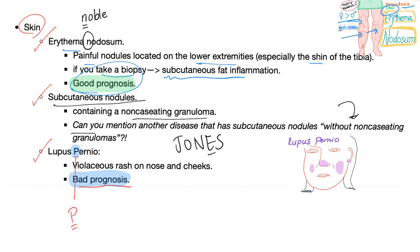Lupus pernio is violaceous — violet in color — presenting as a rash on the nose and cheeks, and carries a poor prognosis. Pernio is a pernicious lesion.